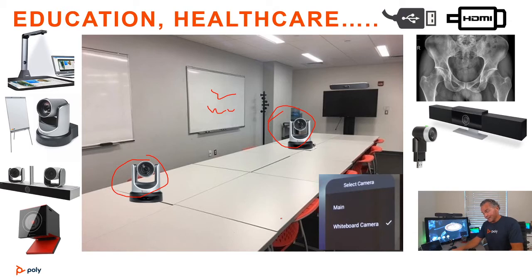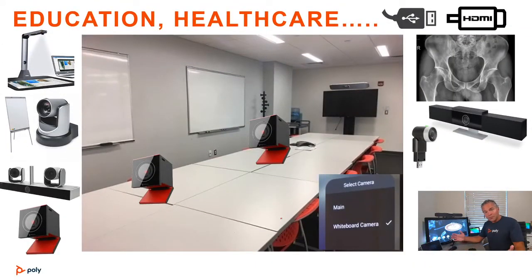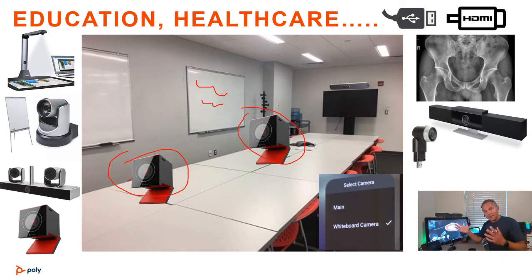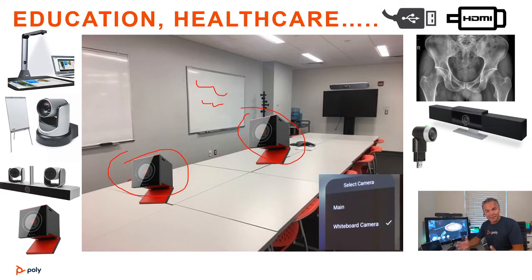You could even use the Cube, which has speaker tracking — that's very nice. You can connect multiple Cube cameras which will follow the speaker. So if you're standing in one spot and walking over to another, the camera is able to track you. It will also remember those settings for each specific camera connected to the G7500 or X50.